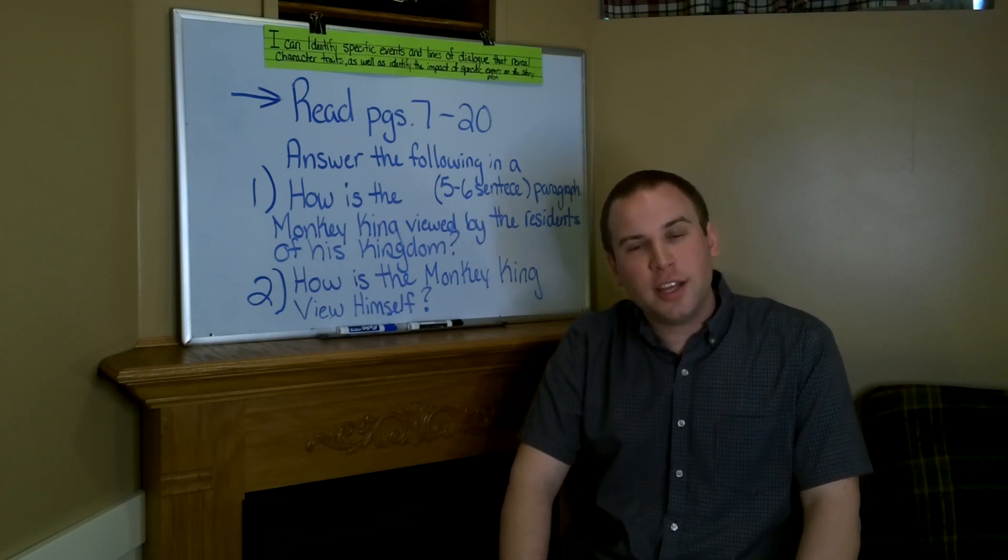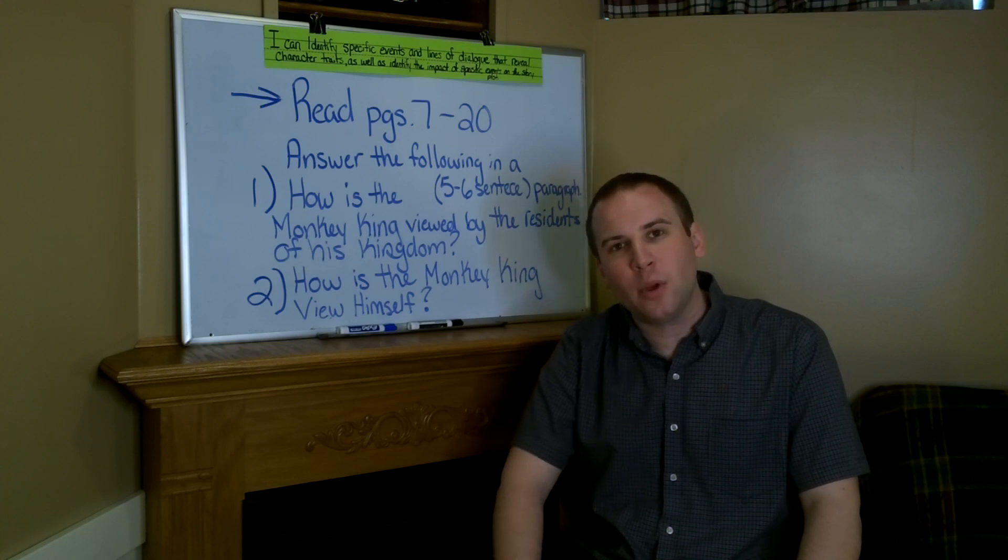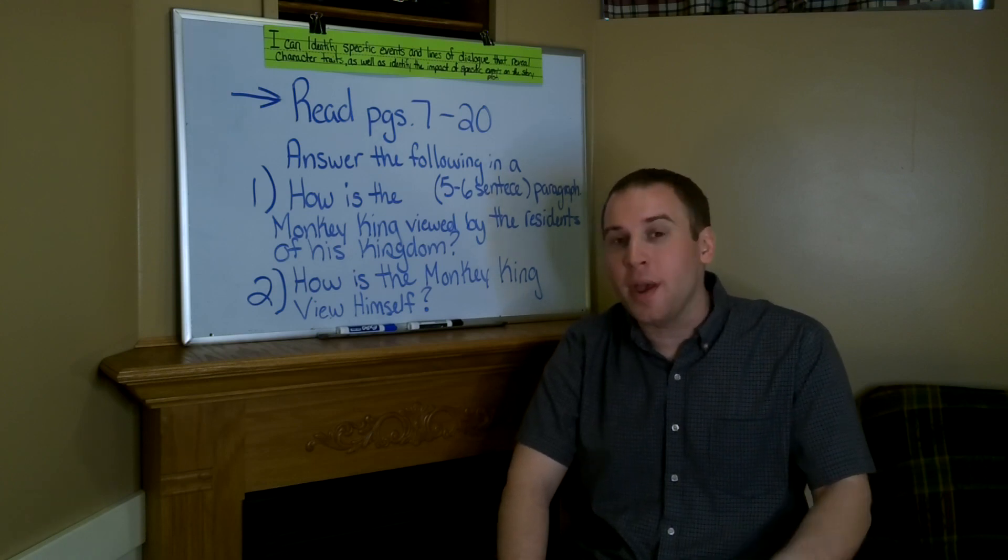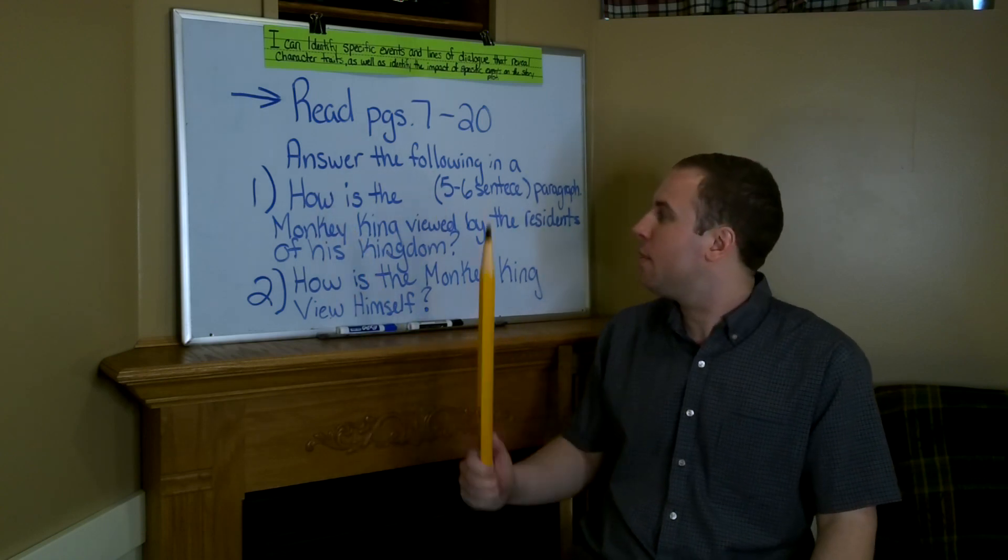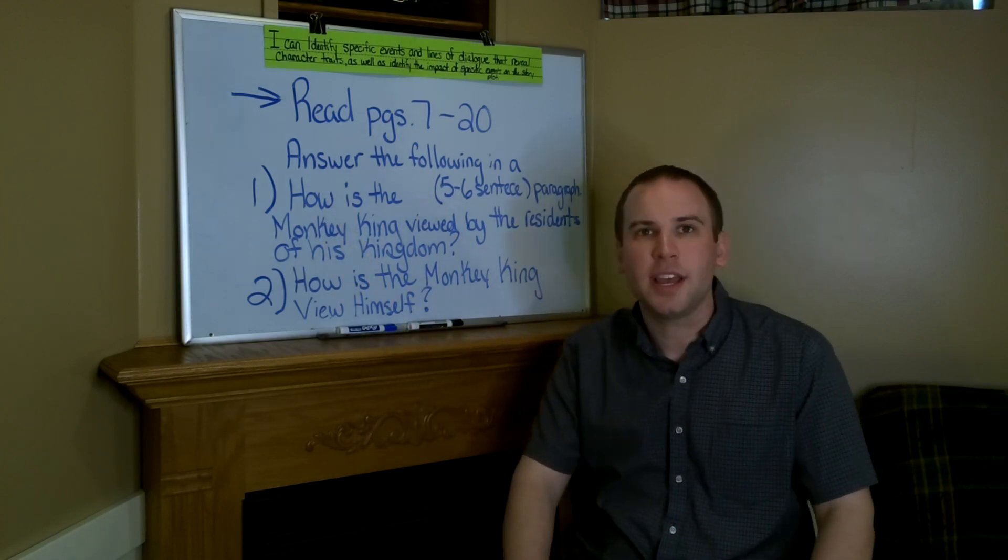As you are reading these pages, I want you to answer the following questions in paragraph form. That's five to six sentences for each paragraph. Your first question entails, how is the Monkey King viewed by the residents of his kingdom?